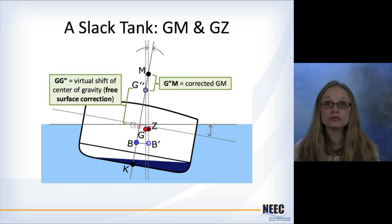If you draw a line from the new center of gravity up to where it hits the center line, that point we call G double prime. And the distance between the original center of gravity G and G double prime, we call the virtual shift of the center of gravity, otherwise known as the free surface correction. So then we now have G double prime to M, which is the corrected GM, and this corrected GM is the true measure of the initial stability of your ship.